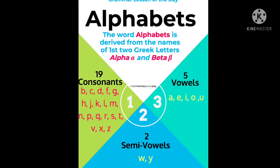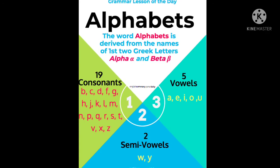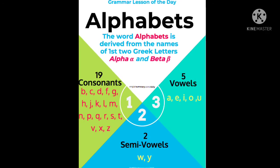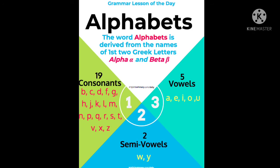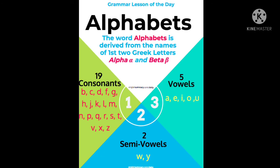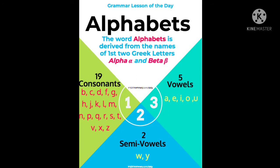Vowels are letters which we can pronounce independently, without taking help of any other letter. Consonants always need help — they take help from vowels. For example, if you pronounce 'b', the 'e' sound comes from a vowel. Semi-vowels are not exactly vowels or consonants — they are in the middle, so they are called semi-vowels.